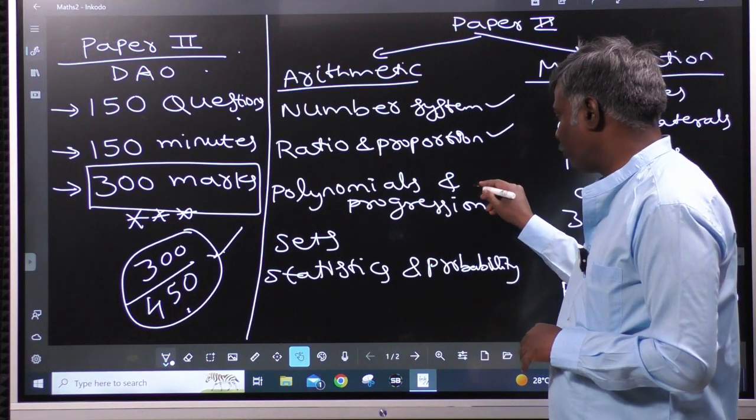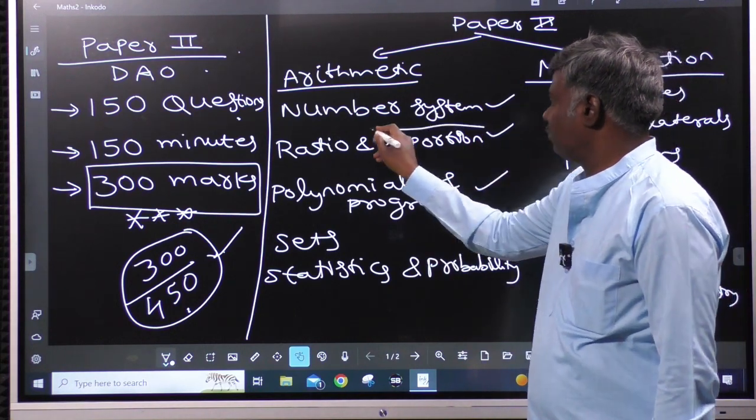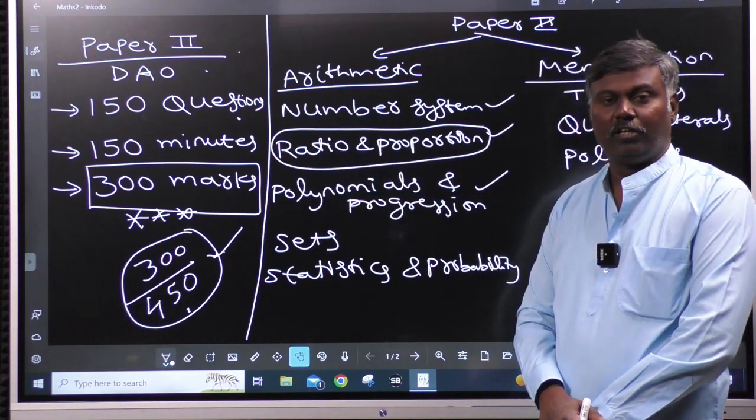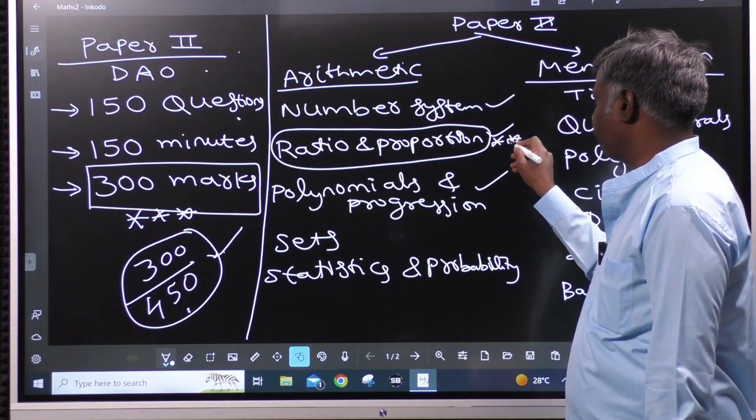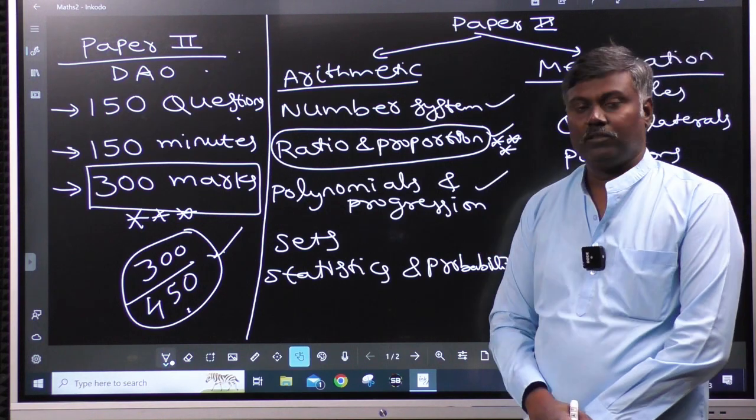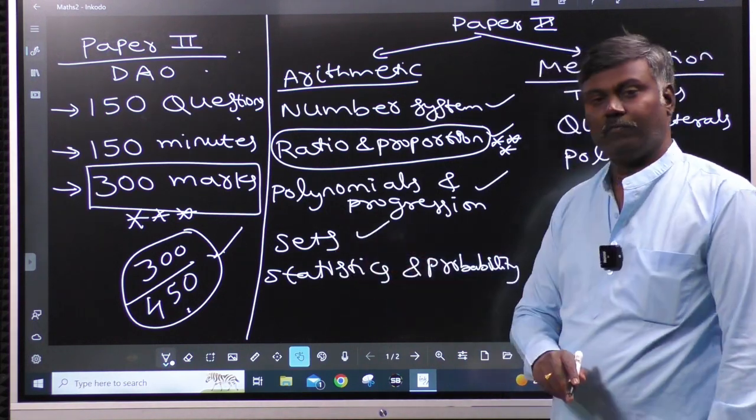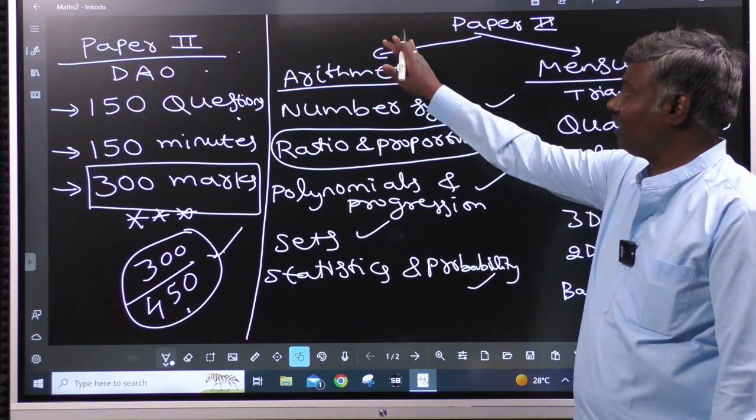Polynomials progression. This is an important topic, the ratio is very important, very very important. The other thing is Sets. Statistics and Probability. This is the arithmetic.